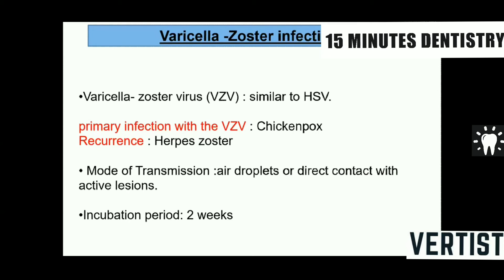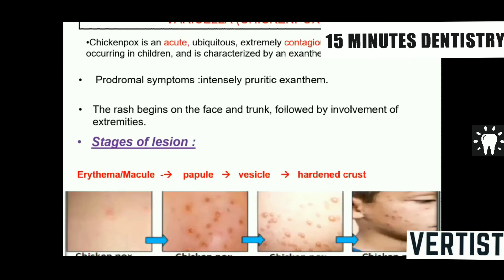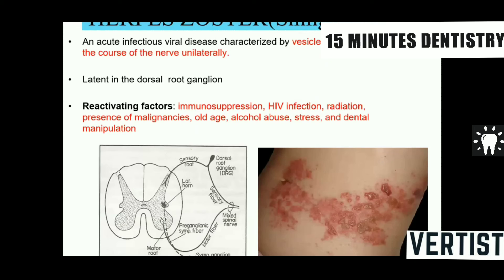Varicella zoster virus produces a primary infection called varicella or chickenpox, and the recurrent infection is called herpes zoster or shingles. Chickenpox is associated with prodromal symptoms and an intense pruritic exanthem. The rash begins as macules, converts into papules and vesicles, then ruptures to form crusts on the skin. Intraorally, similar lesions are seen. After infection, the disease terminates on its own and the virus remains dormant in the dorsal root ganglia.